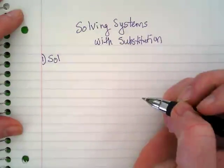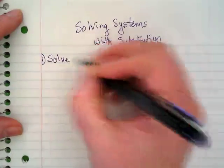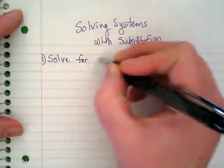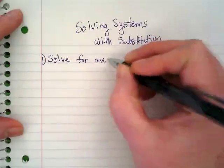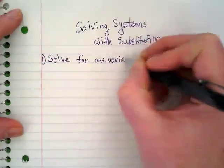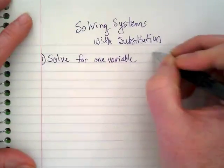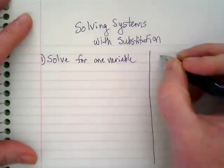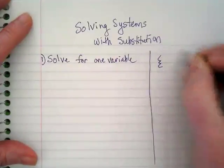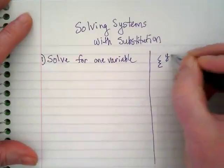So our step one when we're solving systems with substitution is to solve for one variable. Here is the system that we're going to work with, and it's already solved.